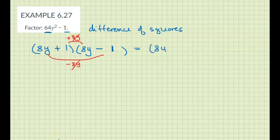So the answer is 8y plus 1, 8y minus 1. So they don't combine with a square because they're not identical. These are conjugates of each other.